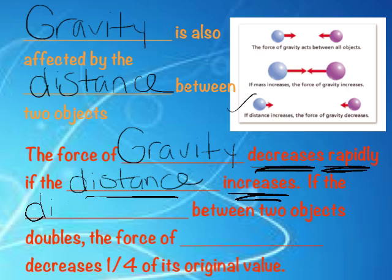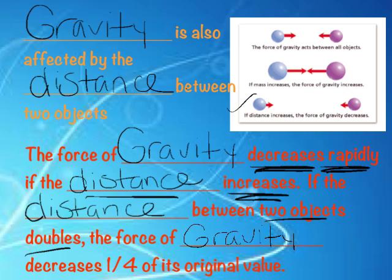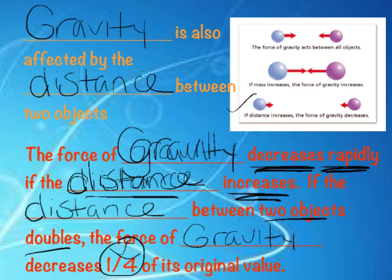If the distance between two objects doubles — meaning they get farther apart — then the force of gravity is going to be about one-fourth of the original value. As we get farther apart, we're going to get weaker gravity. You have this picture on your foldable on the top flap — you can fill in the arrows now to represent what happens when you increase the mass and increase the distance.